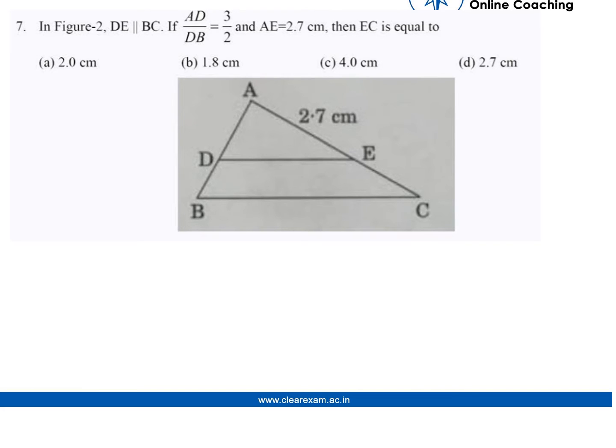In this question from Figure 2, DE is parallel to BC. If AD/DB equals 3/2 and AE equals 2.7 centimeters, then what is EC? We need to find EC.